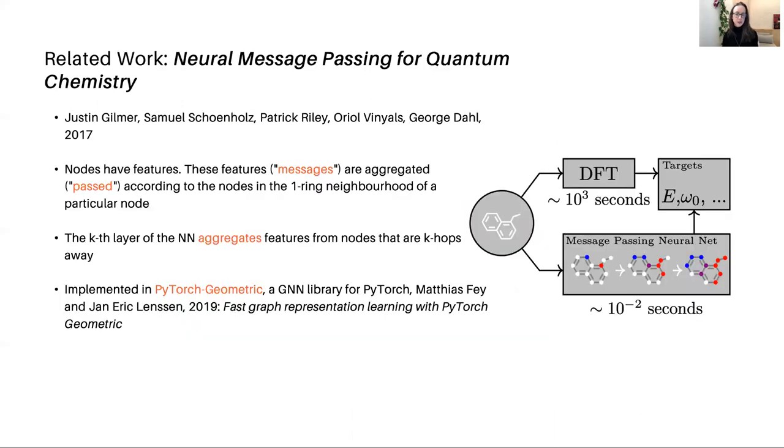To mention some related work, this paper, Neural Message Passing for Quantum Chemistry, takes a similar approach to what we do, but they're using this on a chemical data set and approximating density functional theory simulation. The idea that these authors have is that graph neural networks are like message passing schemes. Each node has features, and these features or messages are aggregated past according to the connectivity of the graph. The deeper the graph neural network, the farther and farther away we incorporate features from. This is a nice convolutional network that is implemented in PyTorch Geometric, a GNN library for PyTorch, which is very useful.